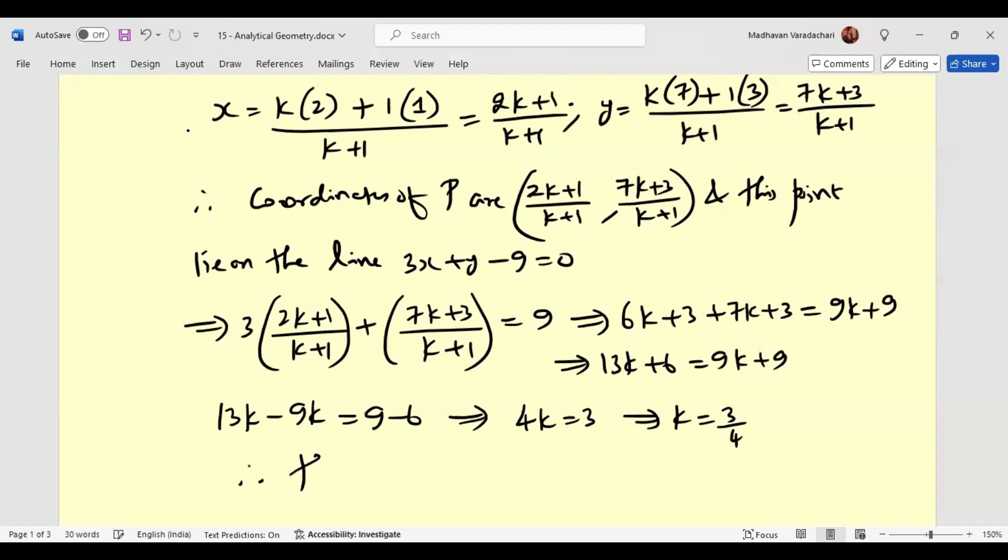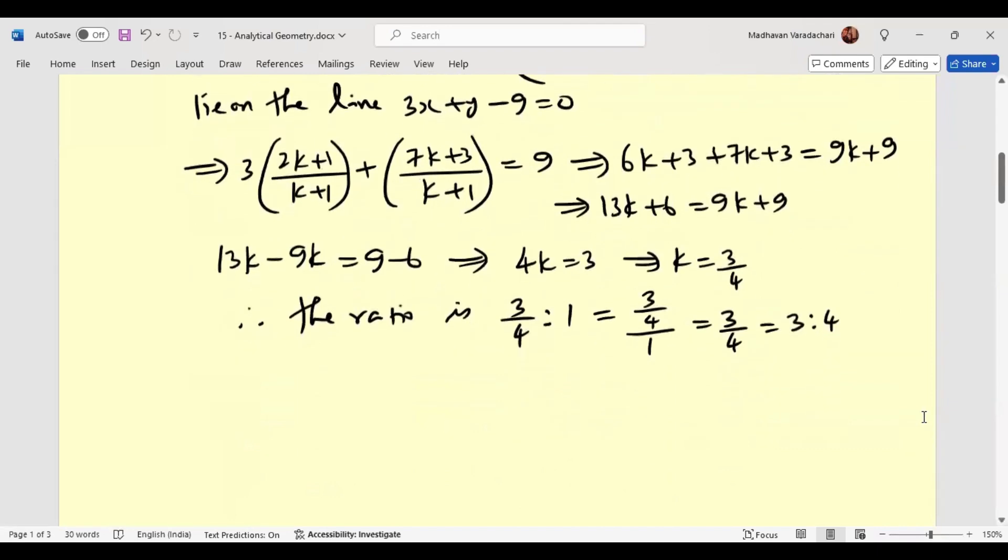Therefore, the ratio will be 3 by 4 is to 1, which is nothing but 3 by 4 divided by 1, or we can simply write 3 by 4. 3 by 4 can be written as 3 is to 4. So the desired ratio is ultimately 3:4.